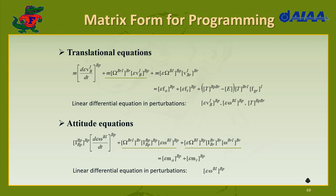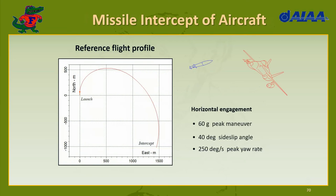Now we apply this to a very important missile problem. We have a missile launched against an aircraft. The launch point is here, the intercept point is down here, and the missile makes a very serious maneuver for the intercept. It peaks at 6 G's with a side slip angle of up to 40 degrees and a yaw rate of 250 degrees per second.